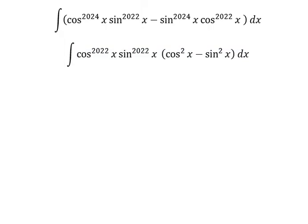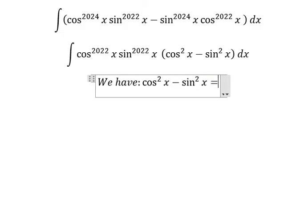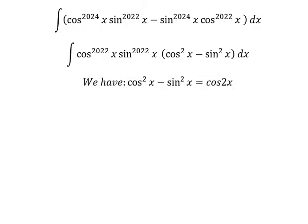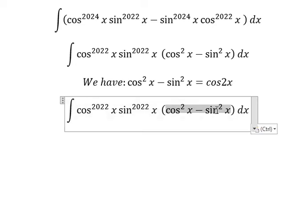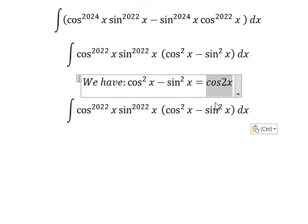Now we have the formula here. We need to transform this one into this one using the identity cosine squared x minus sine squared x equals cosine 2x.